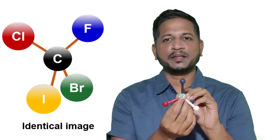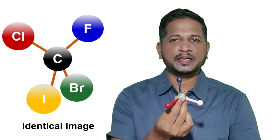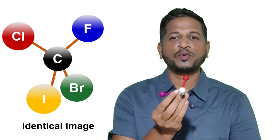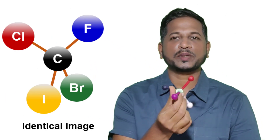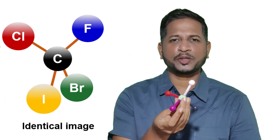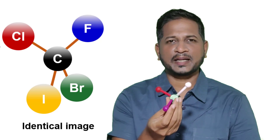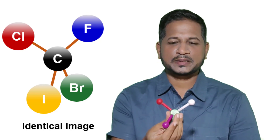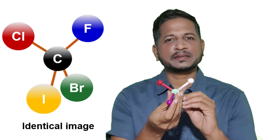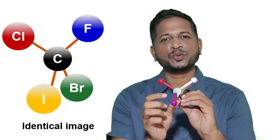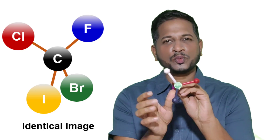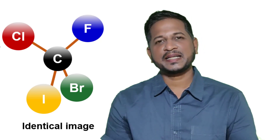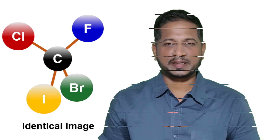So this is the example where a carbon atom is at the center and it is connected to four different constituents. If we rotate the molecule through any other degree, we will not get the equivalent image. So the simplest thing is to rotate the molecule through 360 degrees, and it is called the identity element of symmetry.